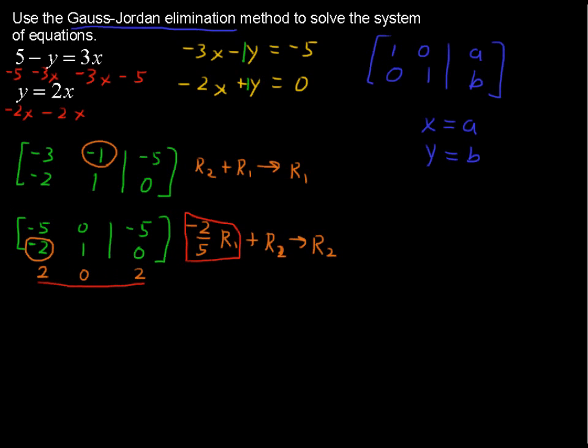Now we're going to add these two things. First row is not being changed, so I'm still going to write negative 5 and 0 and negative 5. And then I'm going to write the result here of 0. Negative 2 and 2 is 0, 1 plus 0 is 1, 0 plus 2 is 2. And look at that, our second row actually is done. We've got a 0 and a 1.